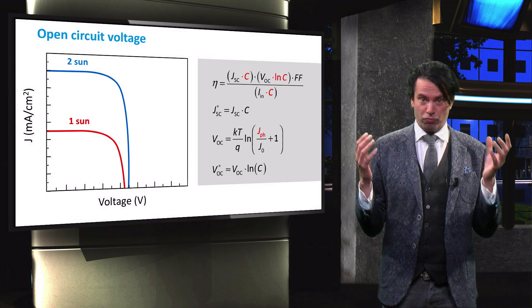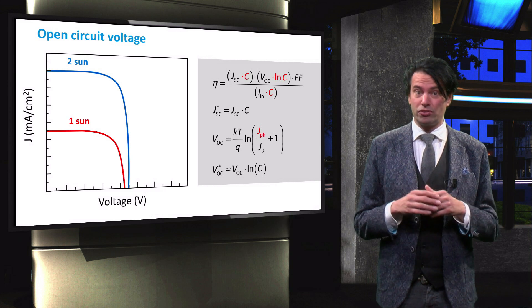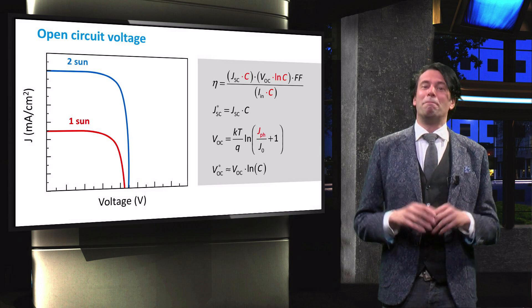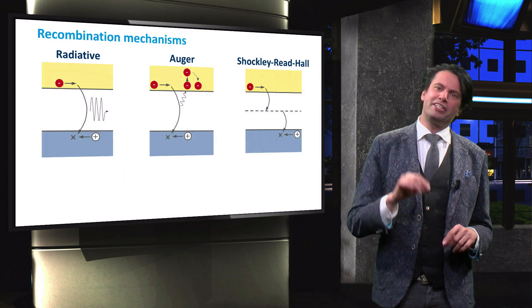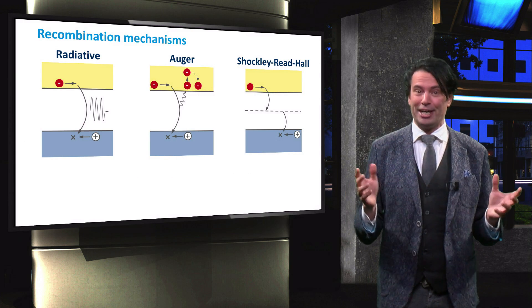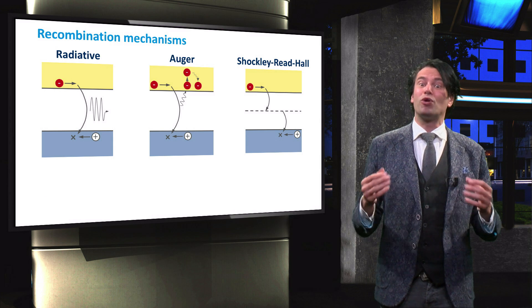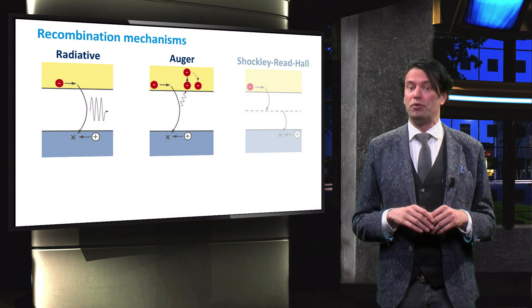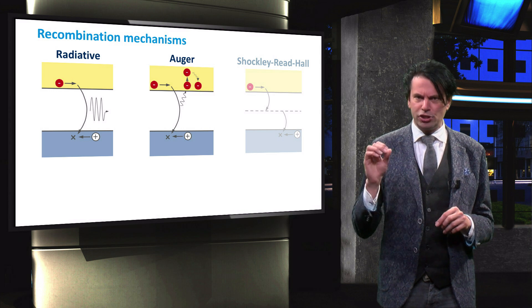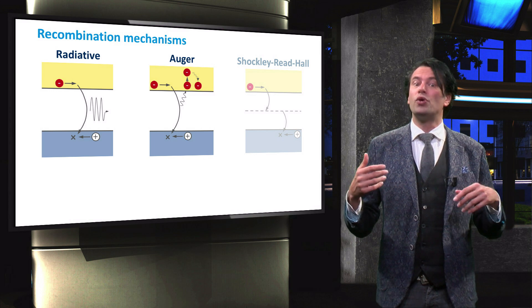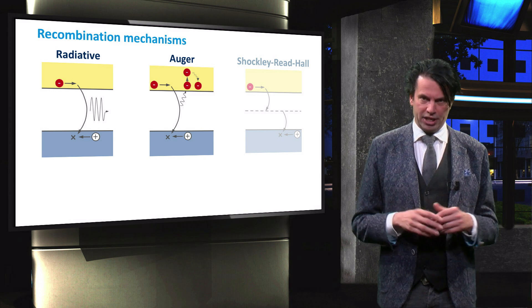So are there any limitations to this performance increase with light concentration? Of course there are! There are two main drawbacks. For the first limitation we have to look into the different recombination mechanisms again. If we consider a high quality 3-5 solar cell, we can ignore the Shockley-Read-Hall recombination, which is determined by the defects in the material.